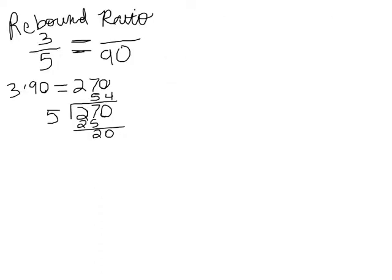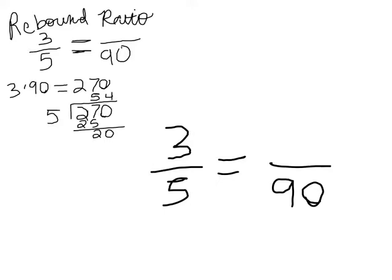Another way to do it is to look at the fractions 3 over 5 is equal to 90 on the bottom and something on the top. So what number times 5 gives me 90? Well, if you do your division, 90 divided by 5 is 18. So 5 times 18 gives me 90. So 3 times 18 will give me the number over here, which gives me 54.